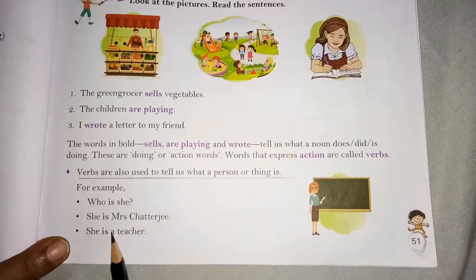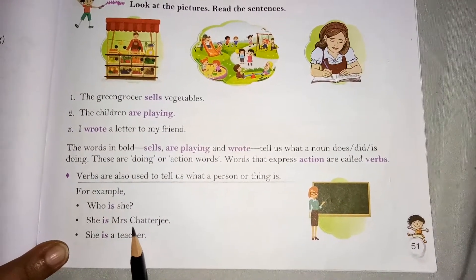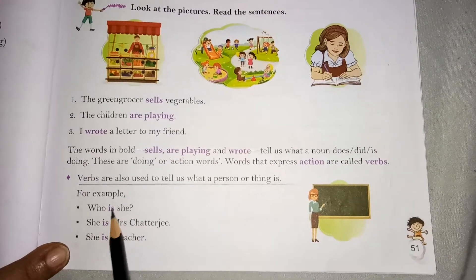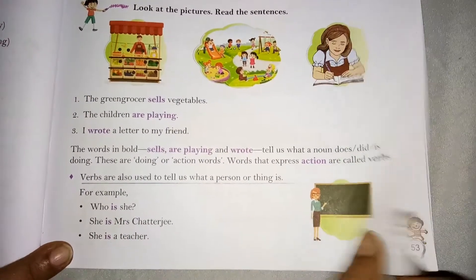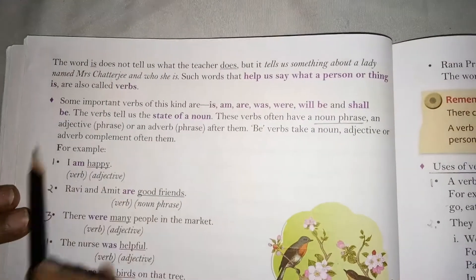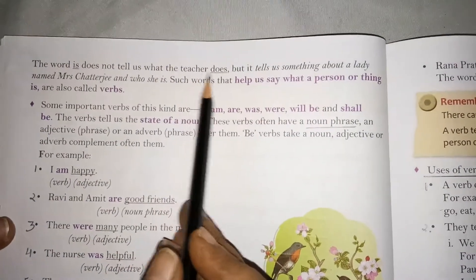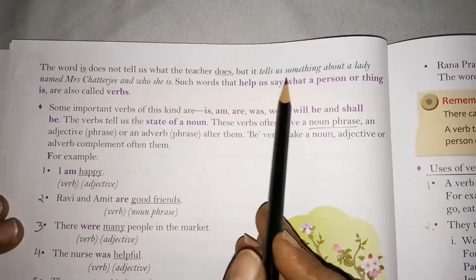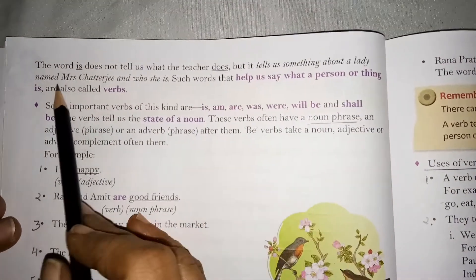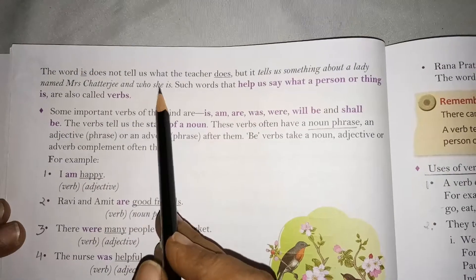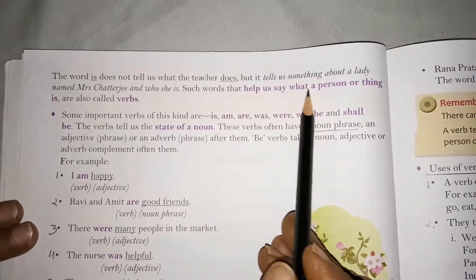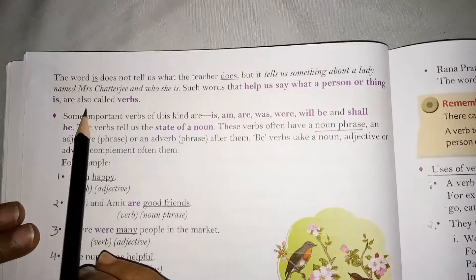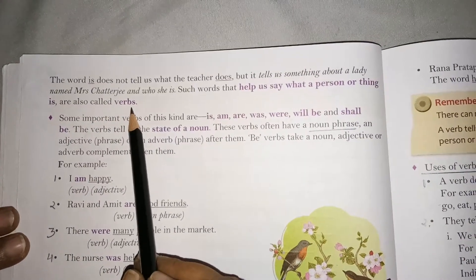In this sentence, Mrs. Chatterjee is a teacher, and the verb 'is' is telling us this. The word 'is' does not tell us what the teacher does, but it tells us something about a lady named Mrs. Chatterjee and who she is. Such words that help us say what a person or thing is are called verbs.